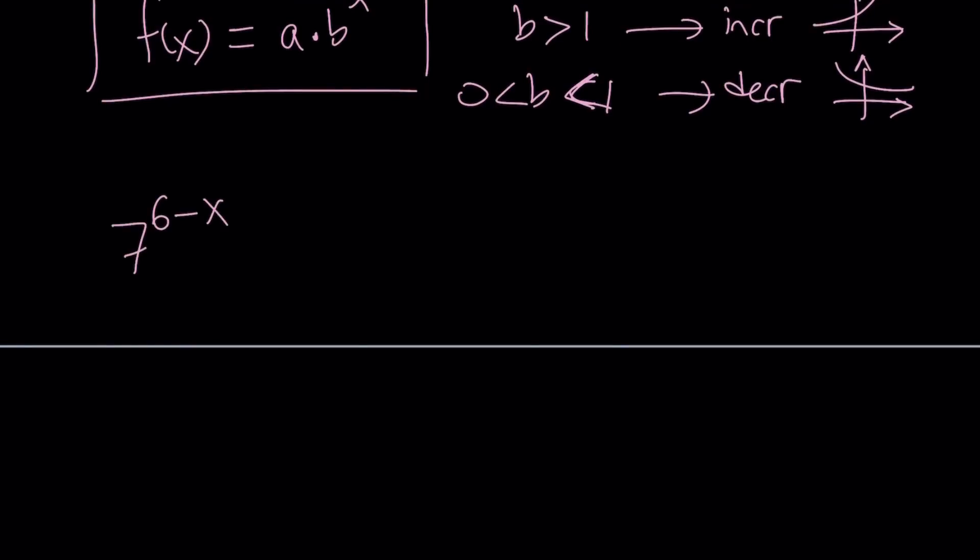7 to the power of 6 minus x. I can write it as 7 to the 6 divided by 7 to the power x. By the way, 7 to the power of 6 is a very large number. I haven't calculated it, but it's probably going to be greater than a million. Well, if you think about it, like 7 cubed is 343, I believe. If you square that number, you probably get something larger than a million. Anyways, that's my estimate.